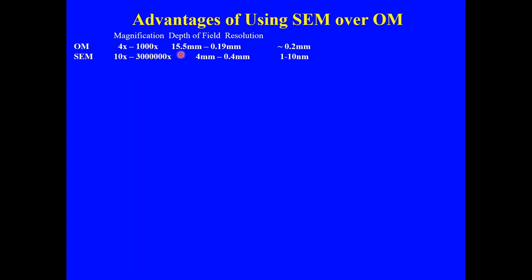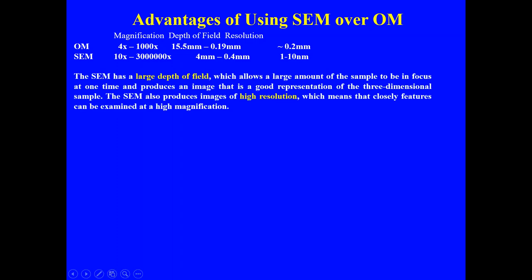Regarding depth of field and resolution, an optical microscope can resolve down to a minimum of 0.2 millimeters, whereas the Scanning Electron Microscope can resolve objects at the nanoscale — from 1 to 10 nanometers. This is the key difference in resolution between the optical microscope and the Scanning Electron Microscope.